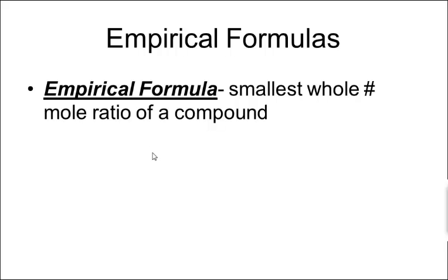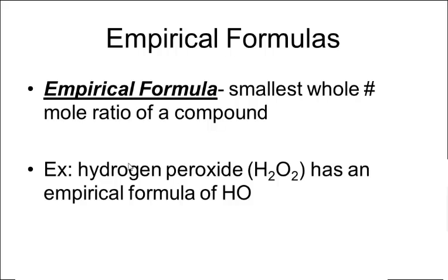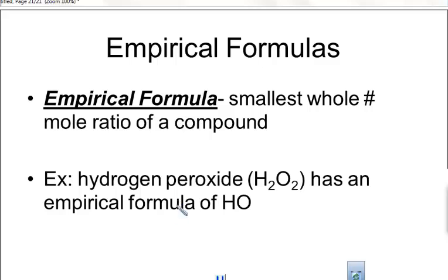An empirical formula is the smallest whole number mole ratio of a compound. We can't just compare grams and masses. You need to get moles as a ratio. For example, hydrogen peroxide, the molecule looks like this. The molecule is HOOH. That is the structural formula of hydrogen peroxide. But the empirical formula is the lowest whole number ratio of the atoms. So in the case of hydrogen peroxide, the empirical formula would be HO.